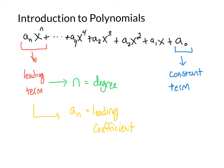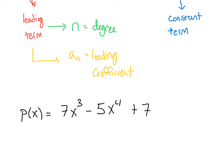Let's look at a concrete example so we can pick out the degree, the leading coefficient, and the constant term. Scrolling down to the example, as I look around each term I notice that every term is just some number times x to a whole number power — which is good. The last term, if you want, you could think of it as x to the zero, but we just write it as a constant term. So this is a polynomial — it satisfies our conditions.